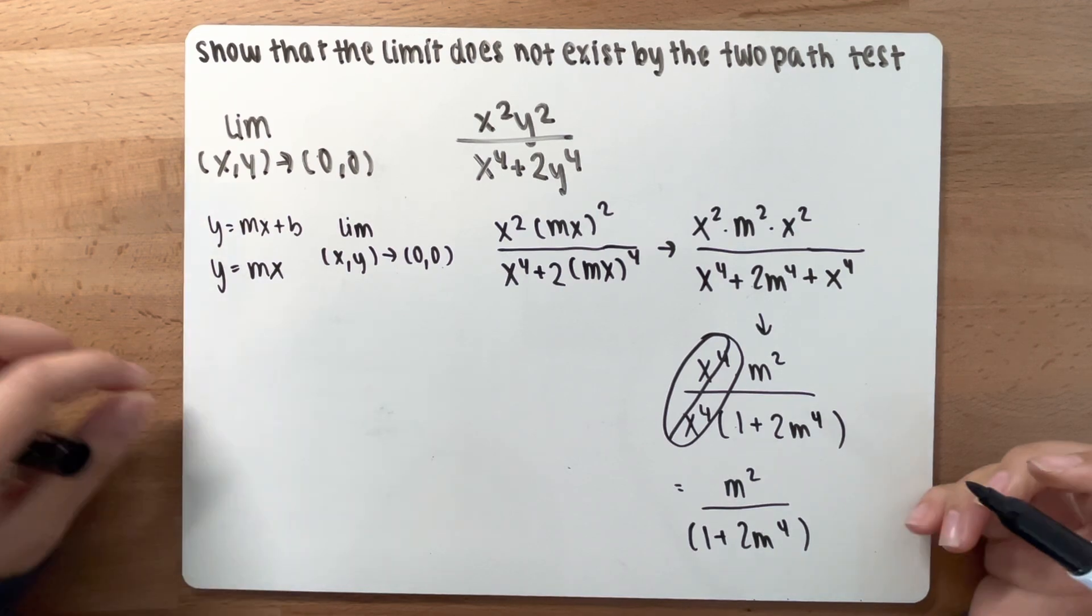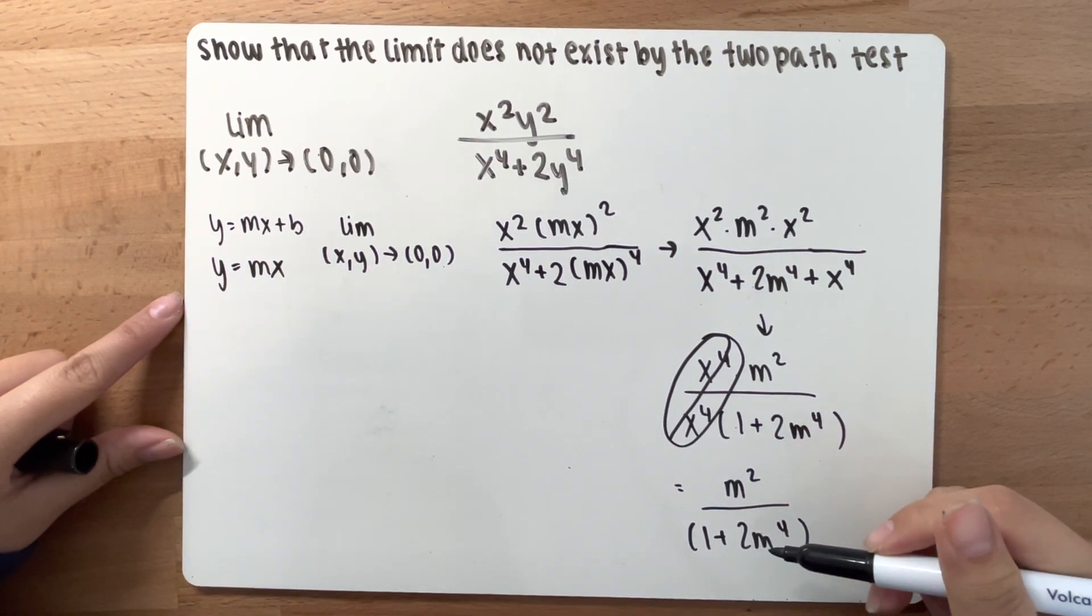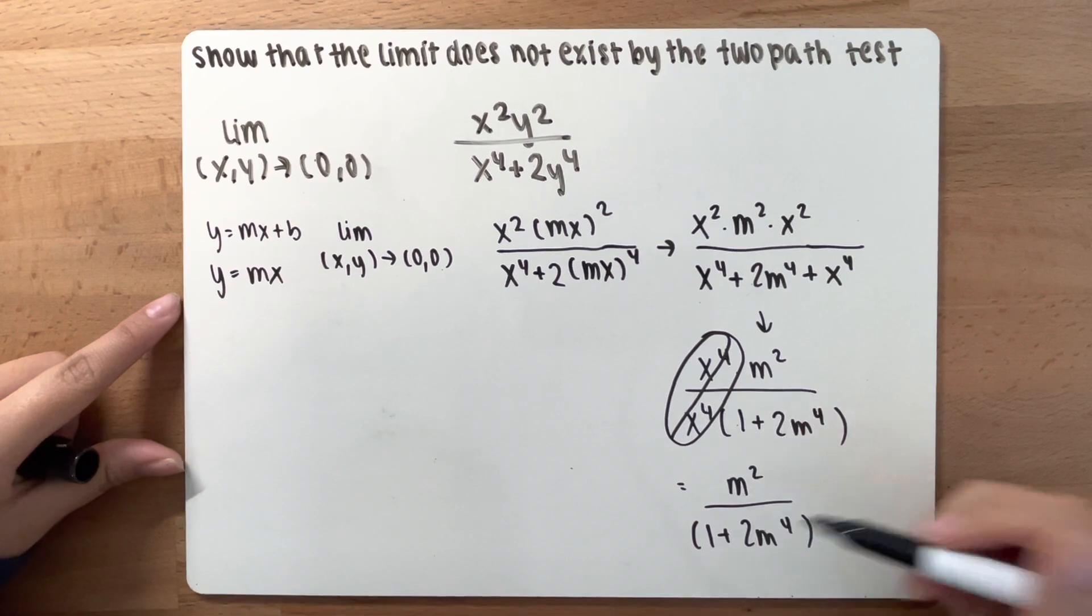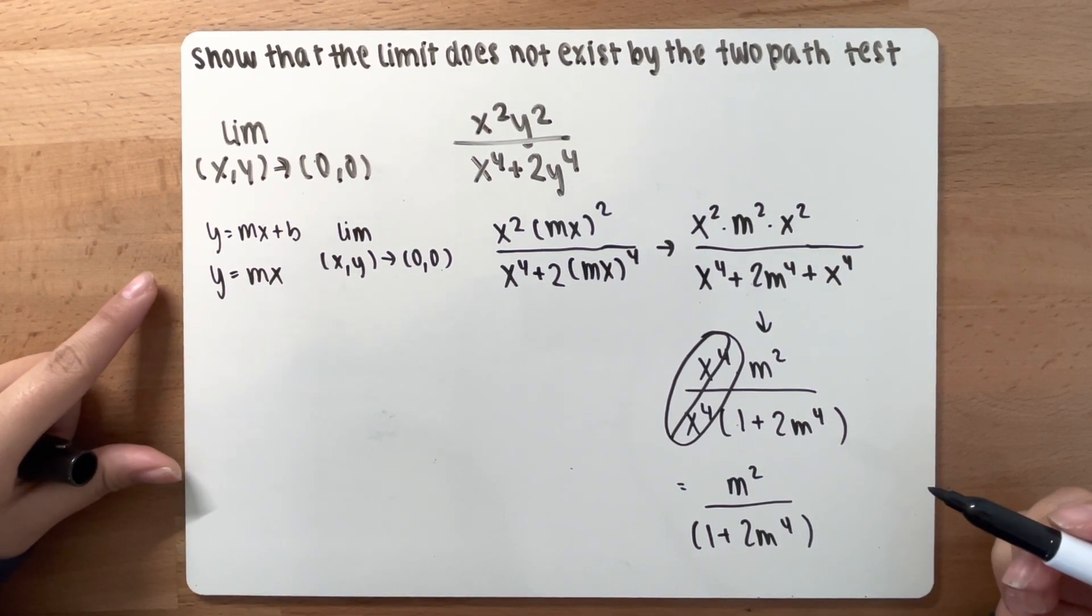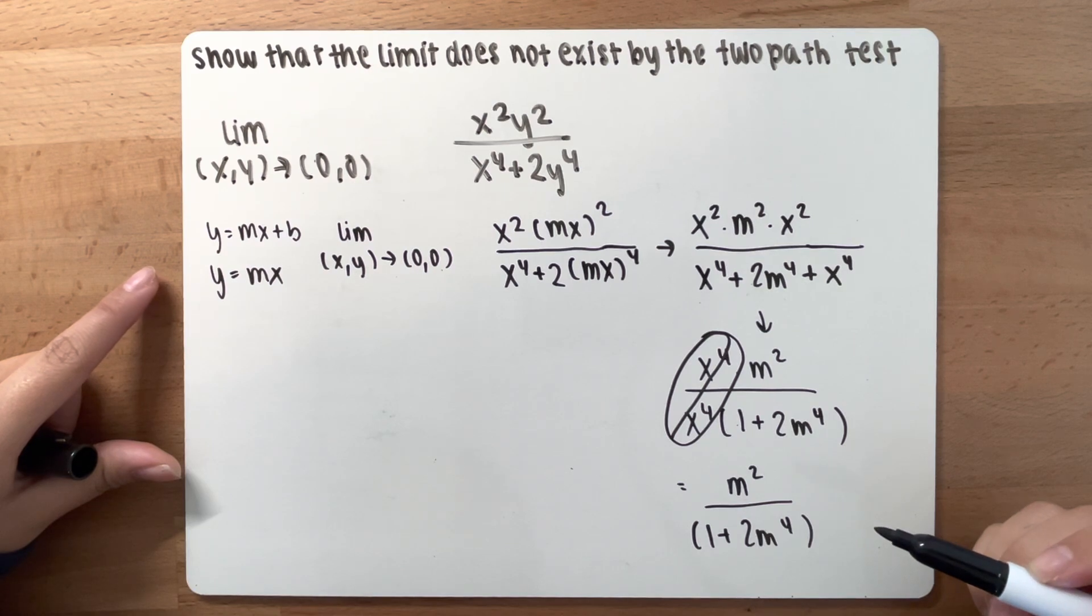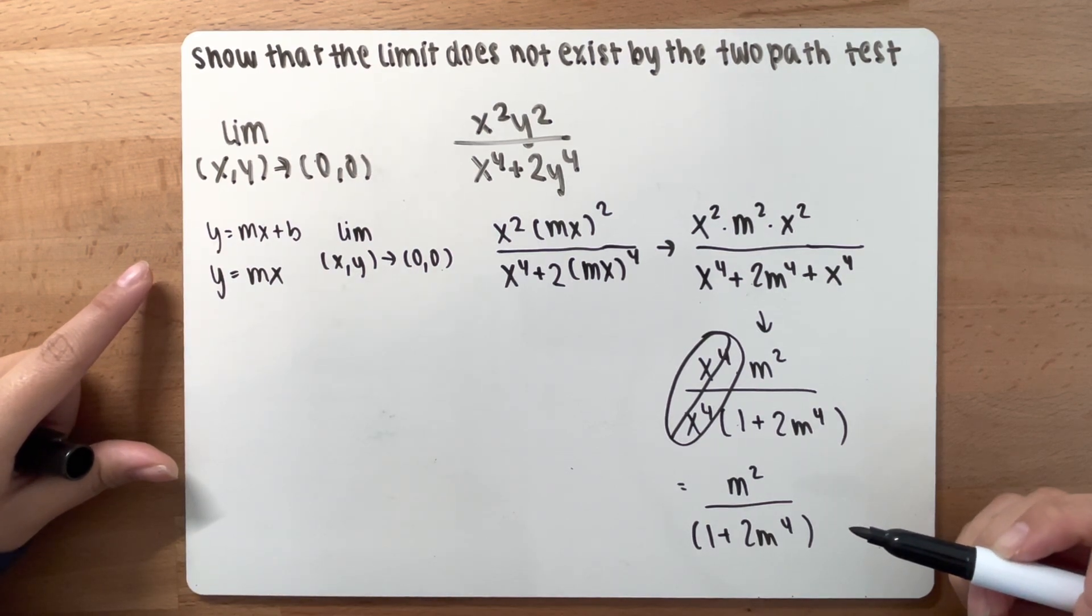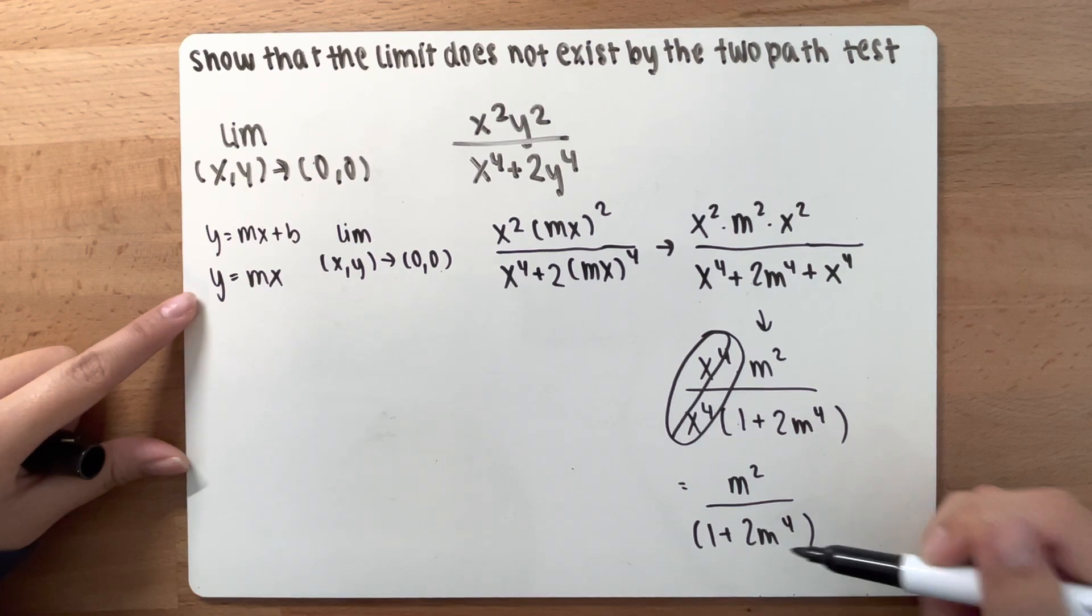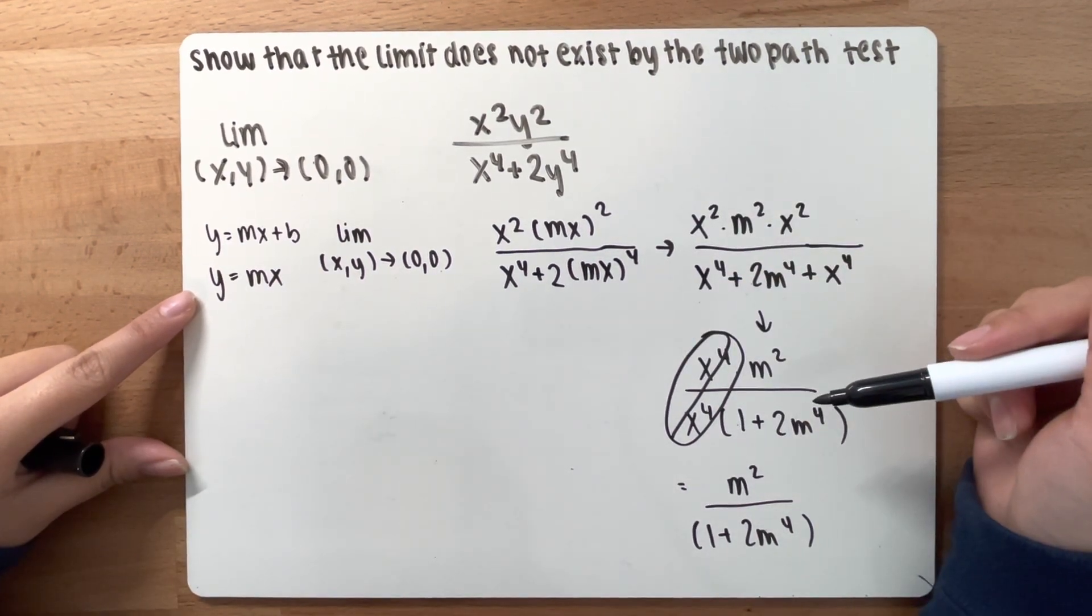And you see how m is a constant? So, since m is a constant, the limit will be different for different values of m. Therefore, by the two-path test, the limit does not exist.